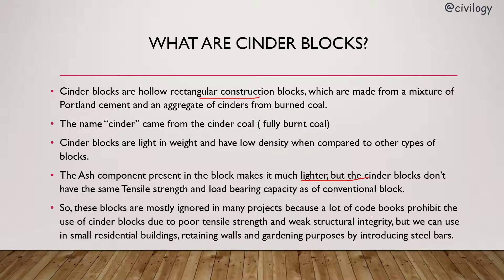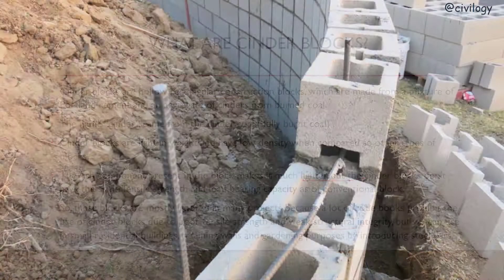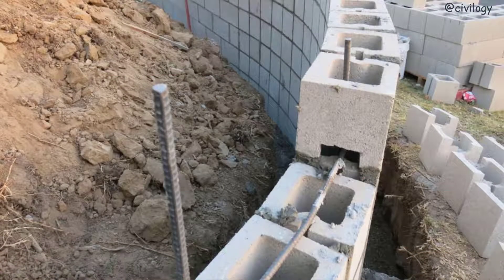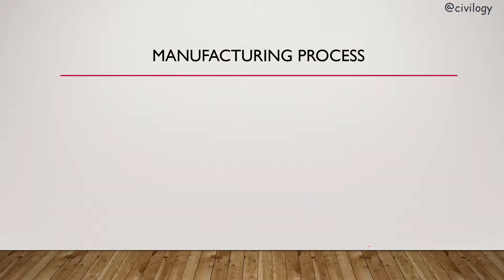These blocks are mostly ignored in many major projects because a lot of code books prohibit the use of cinder blocks due to poor tensile strength and weak structural integrity. However, we can use them in small residential buildings, retaining walls, and gardening walls by introducing steel bars. Steel bars are erected along the walls to give tensile strength to the structure.